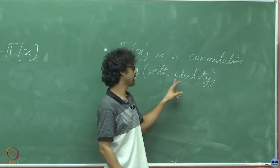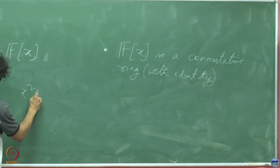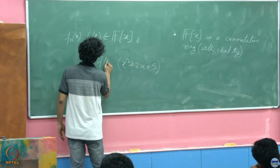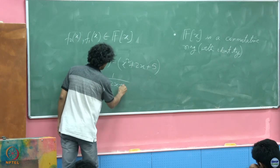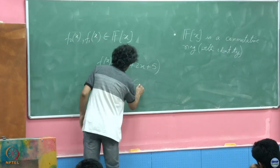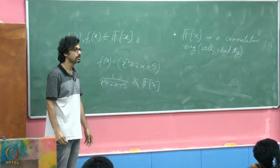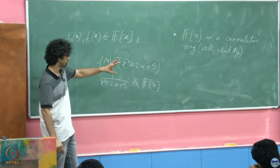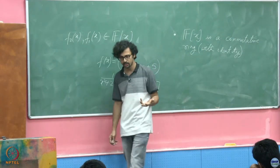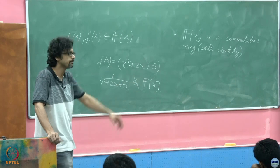Where does a commutative ring with identity vary from a field? It is not a division ring, meaning it does not guarantee that every element has a multiplicative inverse. Take for instance x²+2x+5: its multiplicative inverse would be 1/(x²+2x+5), but this is not a member of this ring. Any non-constant polynomial will fail to have a multiplicative inverse within that ring.